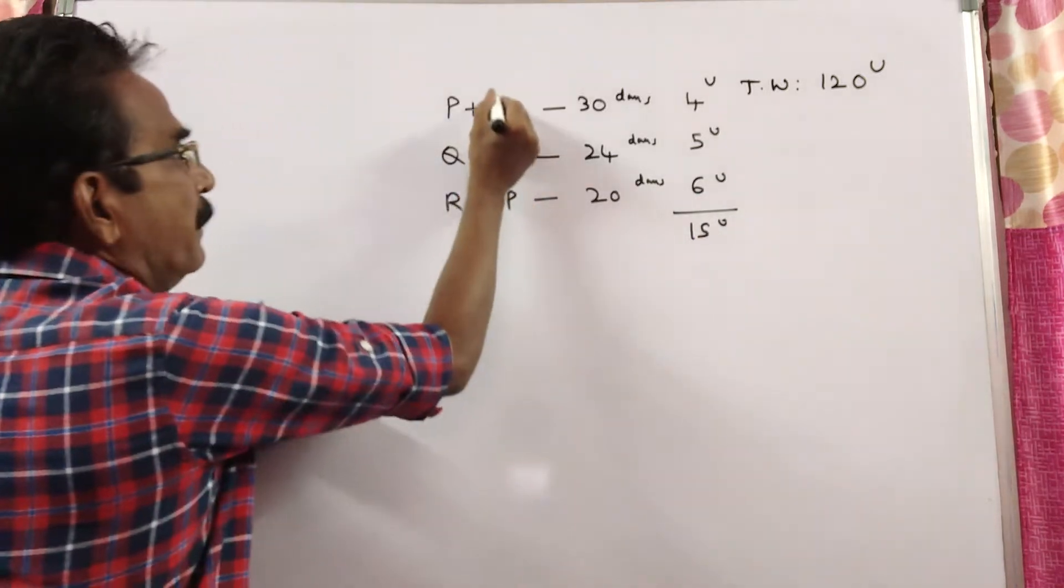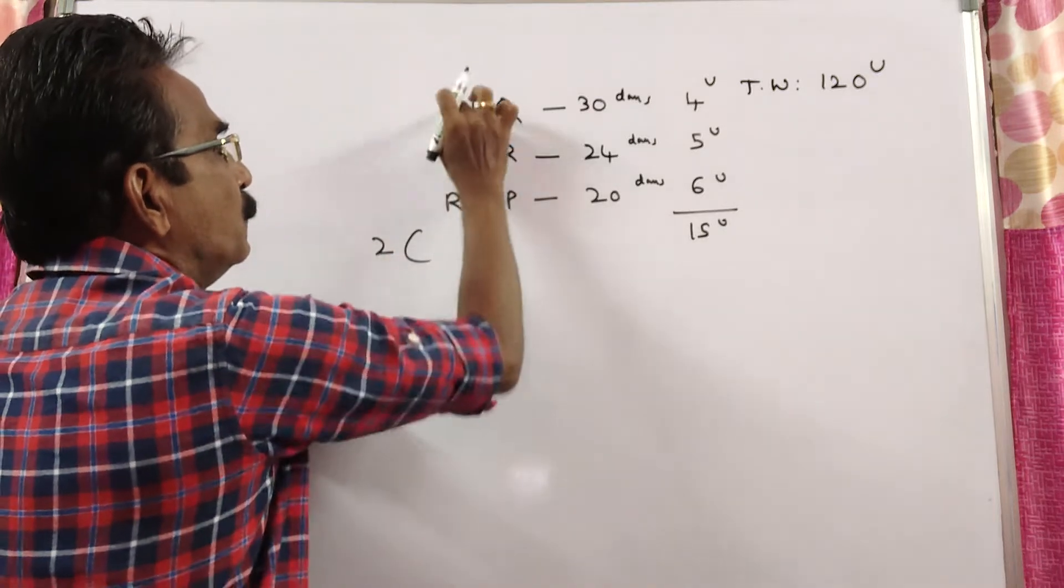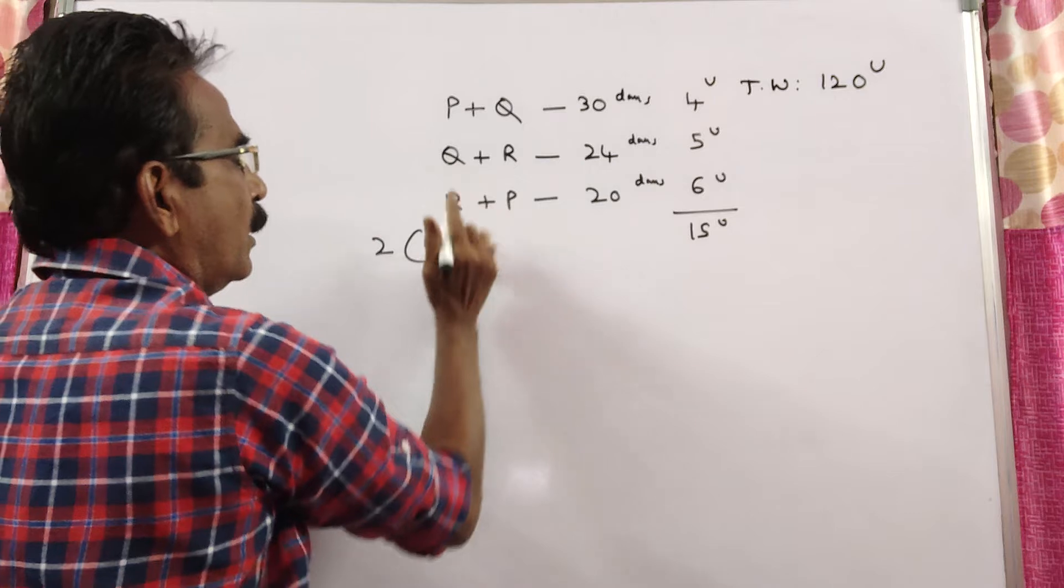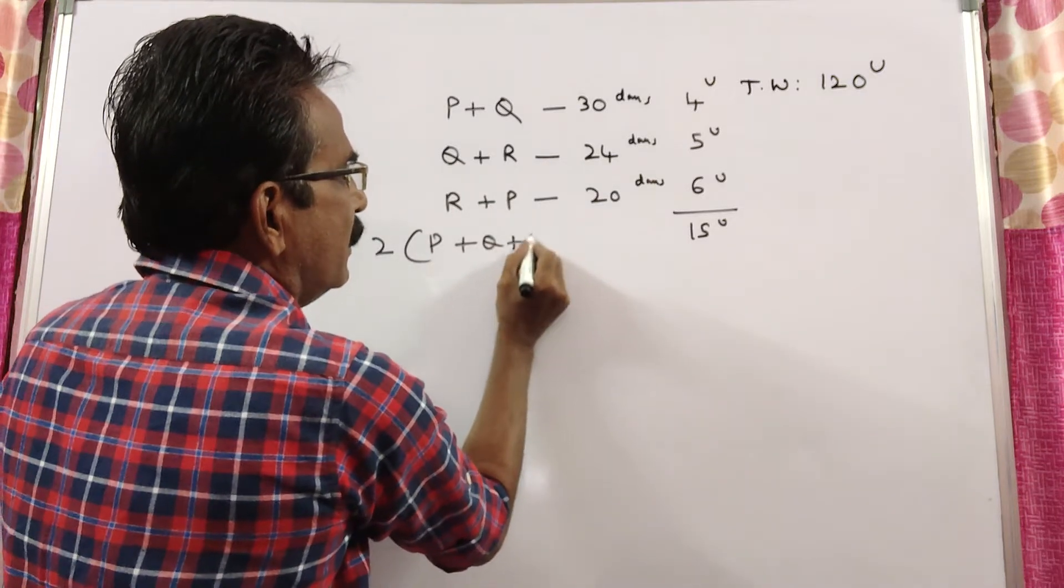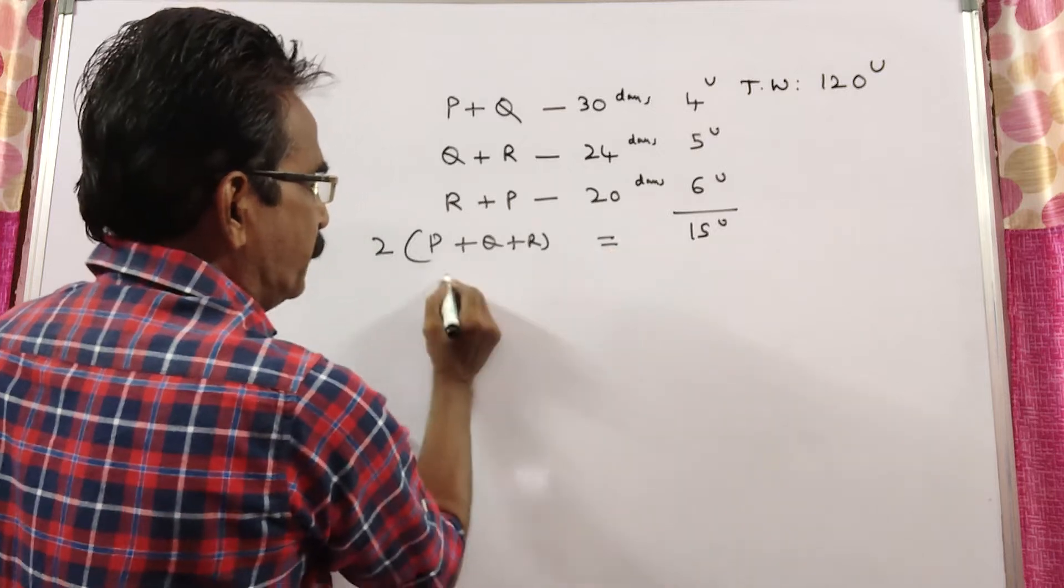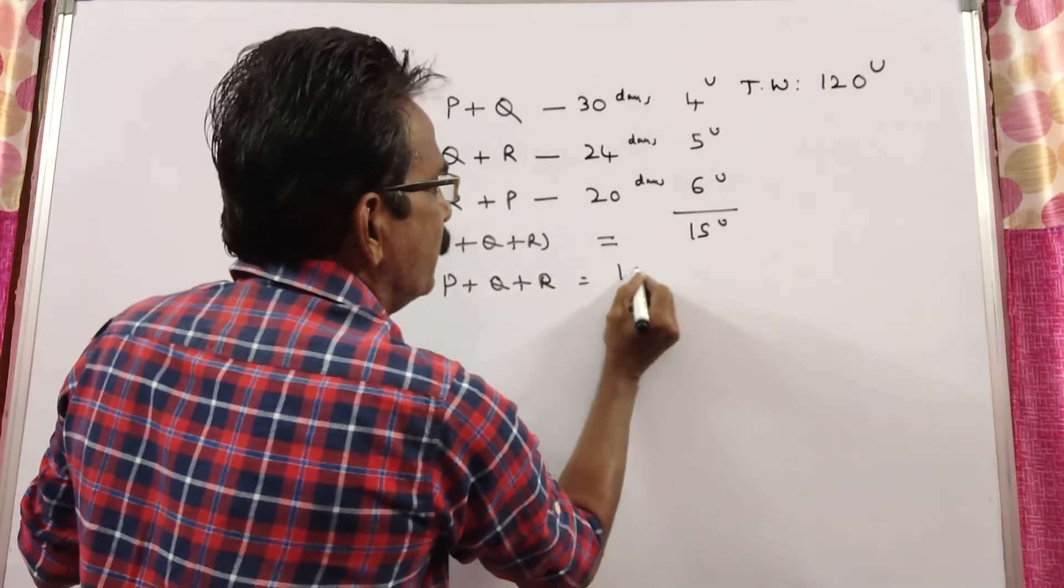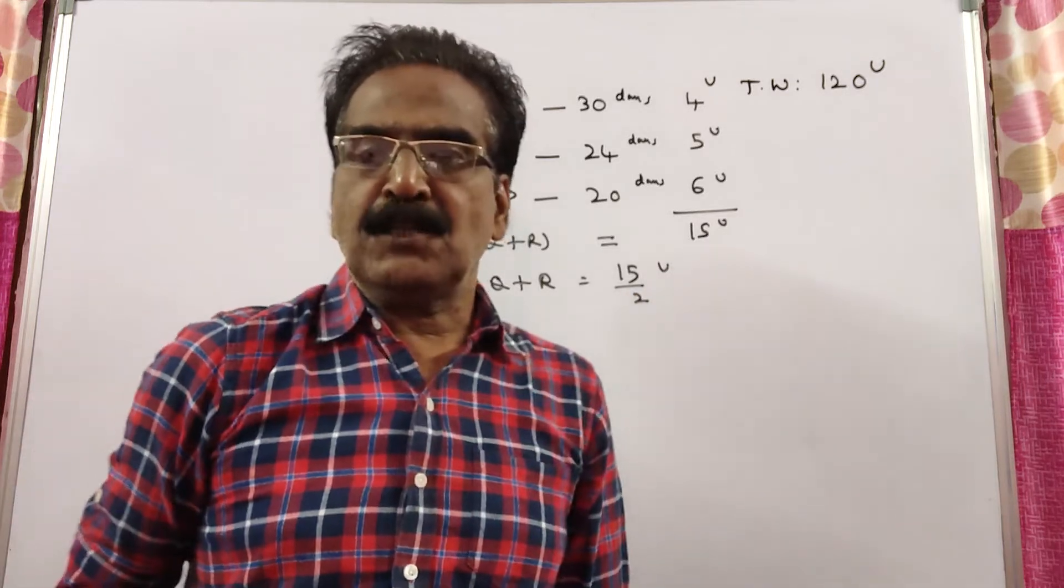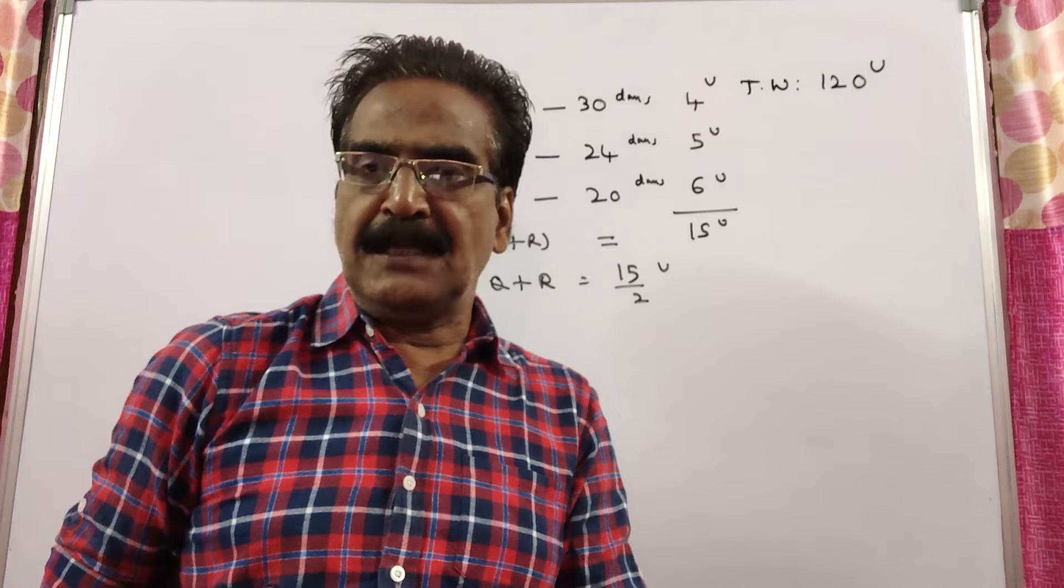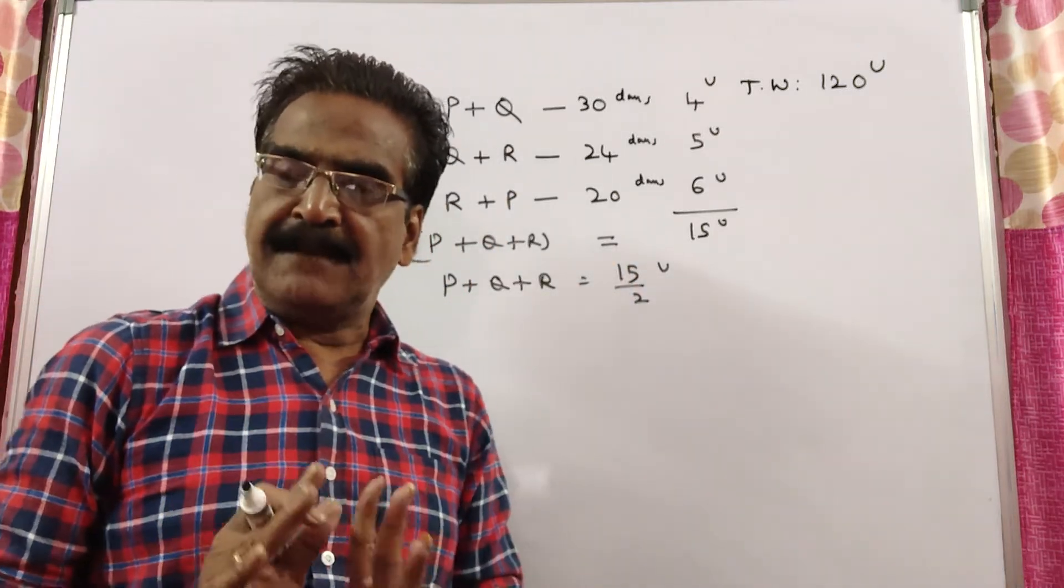Adding this three, we get 2P, 2Q, 2R. 2 into P plus Q plus R is equal to 15 units. So, P plus Q plus R is equal to 15 by 2 units. So, P plus Q plus R together can do 15 by 2 units work per day.